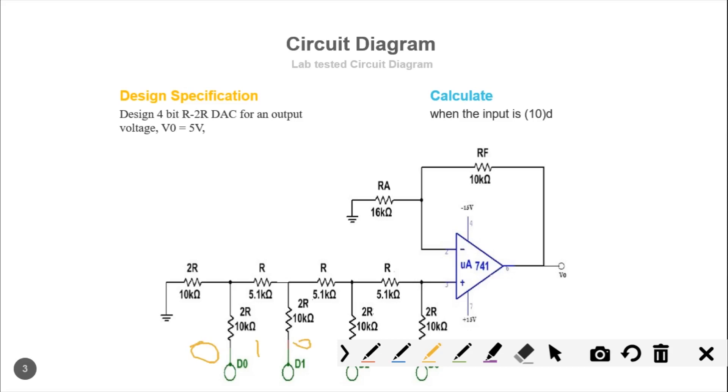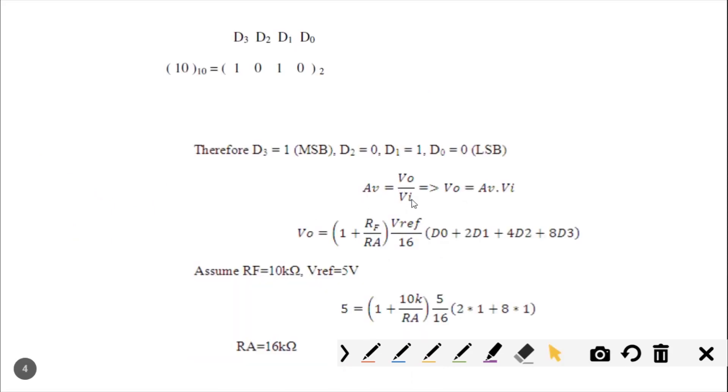After converting, D0 will be 0, D1 will be 1, D2 will be 0, and D3 will be 1. In binary, 1 represents 5 volts and 0 represents 0 volts. Using this convention, whenever we have 1, a 5-volt supply is provided. For decimal 10 converting to binary 1010, MSB to LSB gives us 1010.